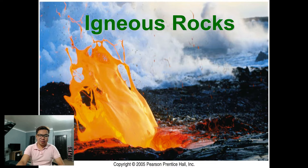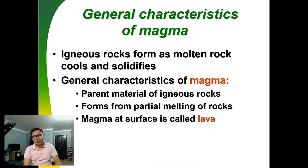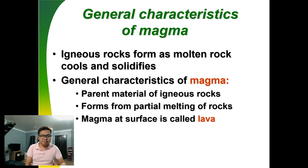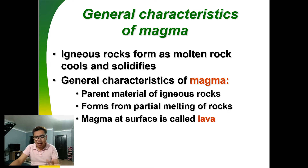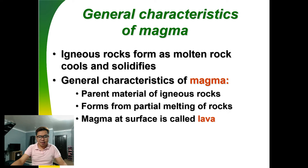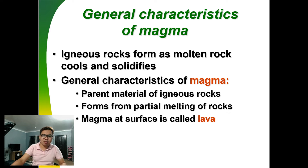Let's talk about Igneous Rocks. General characteristics: it is a molten rock which is cooled down and solidified. The parent material of igneous rocks is magma. It forms from partial melting of rocks. When magma reaches the surface, it is called lava. When it is still inside, it is called magma. When magma cools down and solidifies as lava or rock, that is what we call igneous rocks.